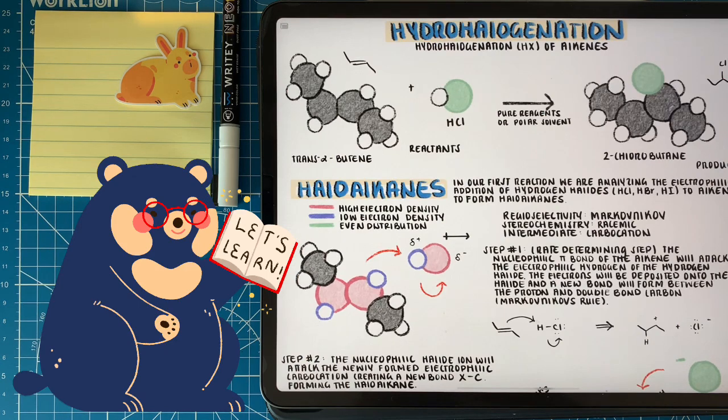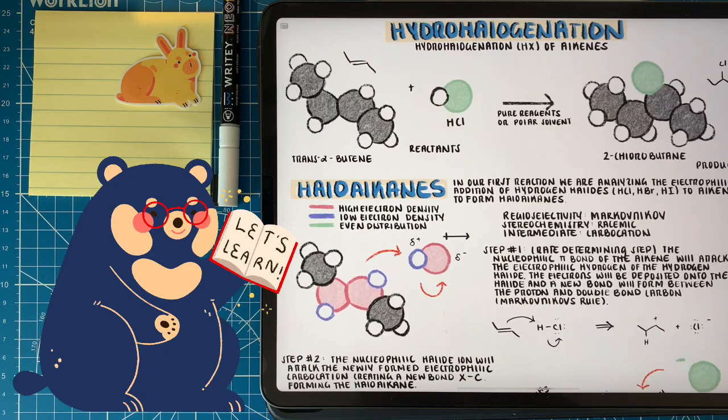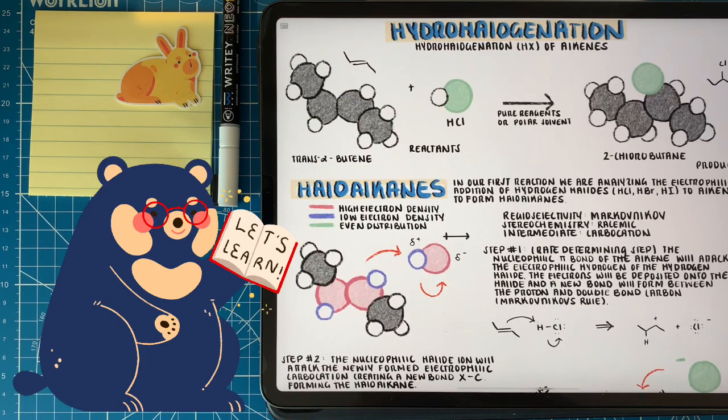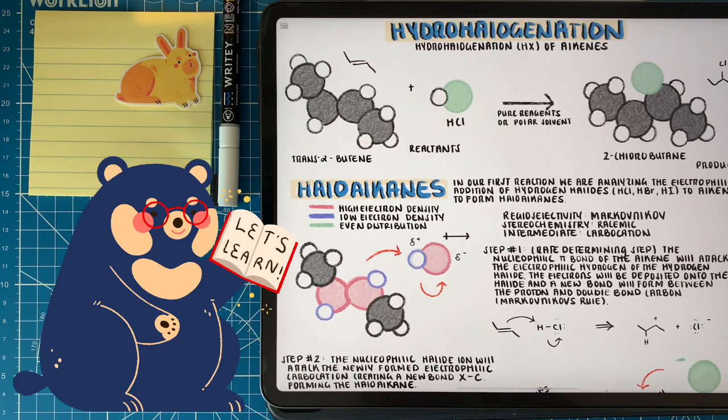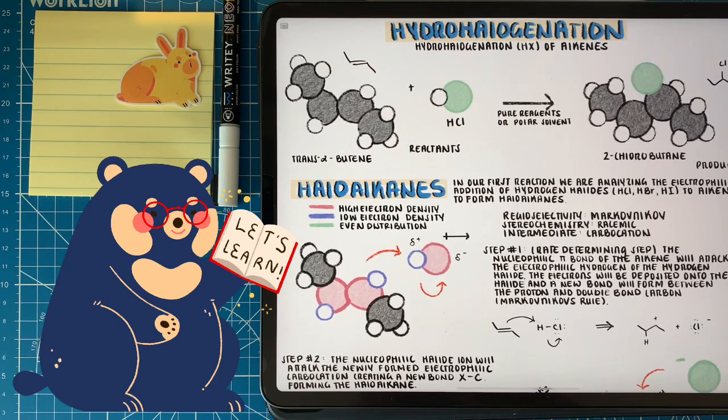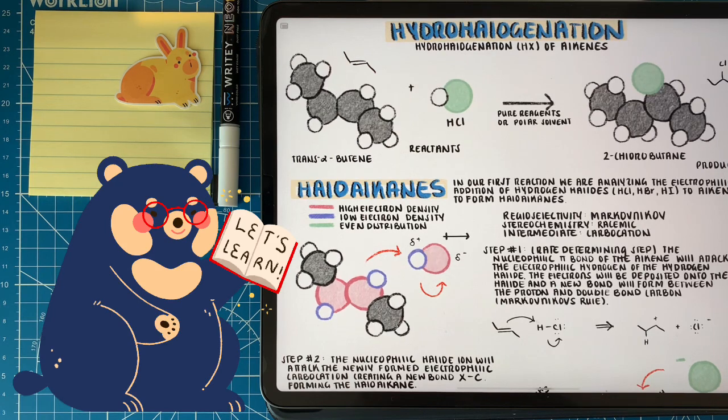I hope this video helped you learn a lot about hydrohalogenation, carbocations, regioselectivity with Markovnikov's law, and the things to know when learning about organic chemistry reactions. In the next video, we're going to dive more into reactions with alkenes, going at a little bit of a faster pace now that we understand the things that influence these reactions.